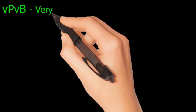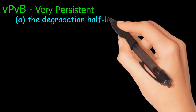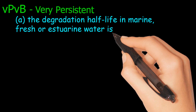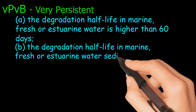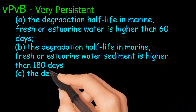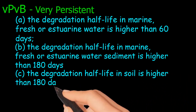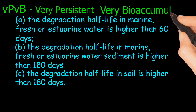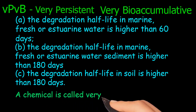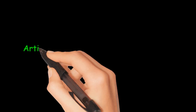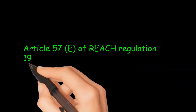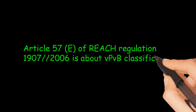VPVB stands for Very Persistent and Very Bioaccumulative. According to REACH regulation, a substance is called very persistent if: the degradation half-life in marine or freshwater/estuarine water is higher than 60 days; the degradation half-life in marine or freshwater/estuarine water sediment is higher than 180 days; or the degradation half-life in soil is higher than 180 days. A chemical is called very bioaccumulative if the BCF is greater than 5,000 liters per kg. Article 57E of REACH Regulation 1907/2006 is about VPVB classification.